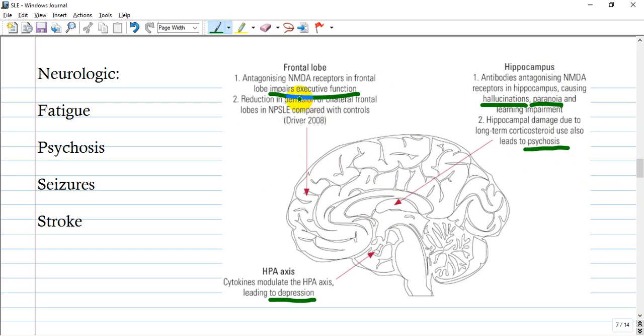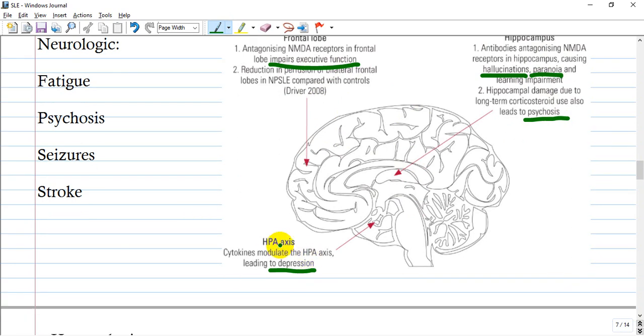there's impairment in executive function or behavioral impairment. If it's hypothalamic involving the HPA axis, it will be depression.